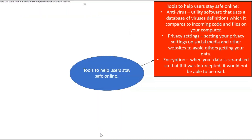In the middle of the page I've written 'tools to help users stay safe online' as my plan. I've listed antivirus, privacy settings, and encryption. Privacy settings means setting your account to private rather than public — specifying who can see your posts. Antivirus software goes without saying, and encryption prevents intercepted data from being read.